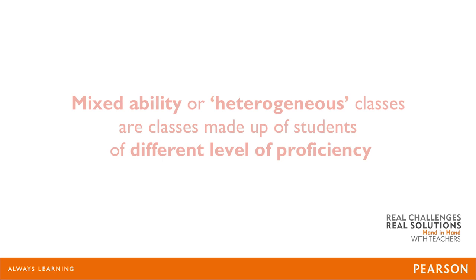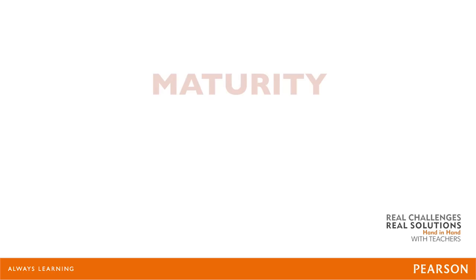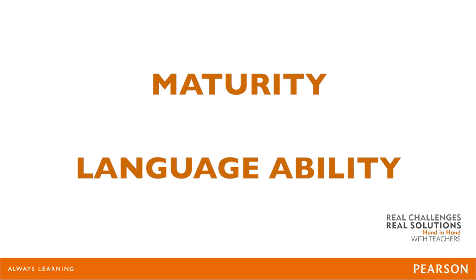First, a simple definition. Mixed ability or heterogeneous classes are made up of students of different levels of proficiency. But as Penny Err suggested in the early nineties, these terms are misleading as no two learners are really alike and homogeneous classes don't actually exist. In fact, all classes are made up of learners who differ in many ways. Some of the most obvious differences include maturity and language ability.